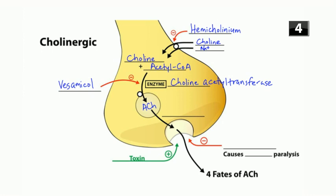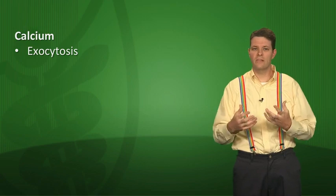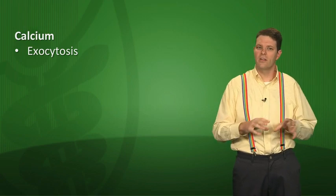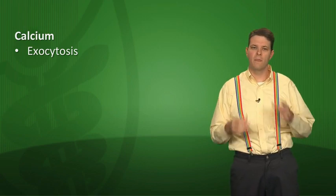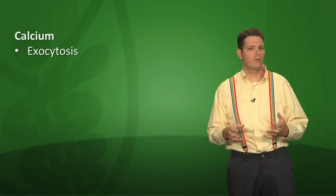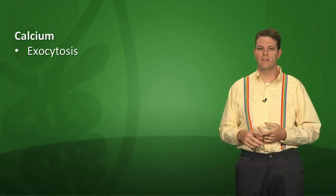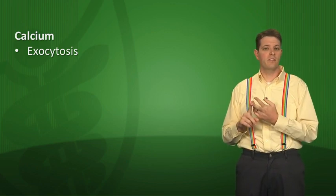The presynaptic cell stores acetylcholine in vesicles until needed. What's required for acetylcholine to be released into the synapse? Calcium. Calcium is essential for exocytosis — to trigger the release of vesicles not just in cholinergic cells but in virtually all cell types. For the most part, vesicles don't get released without calcium.